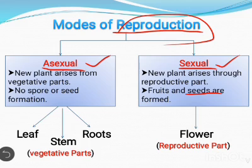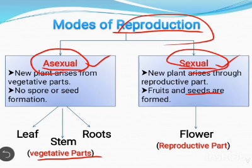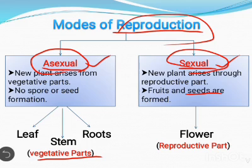Plants have two different kinds of parts to perform different methods of reproduction — asexual reproduction and sexual reproduction. The first one is vegetative parts. Vegetative parts are the parts of the plant that play a major role in the life cycle of a plant, such as preparation of food, transportation of food, water, and nutrients. For example, leaf, stem, and roots.